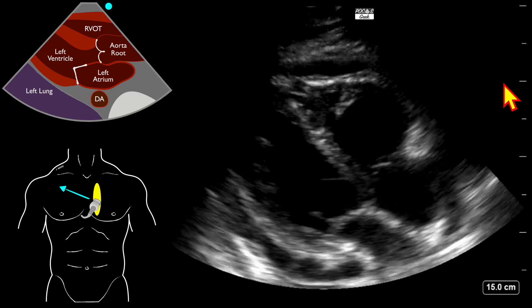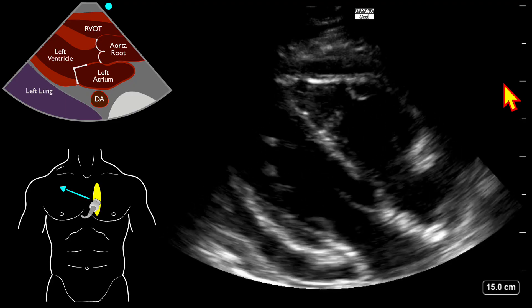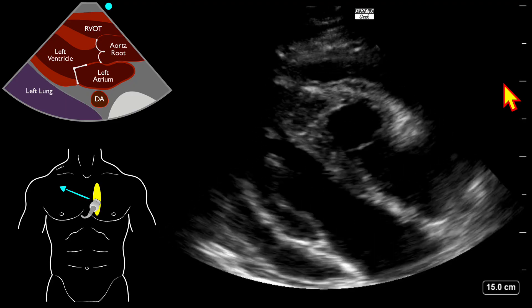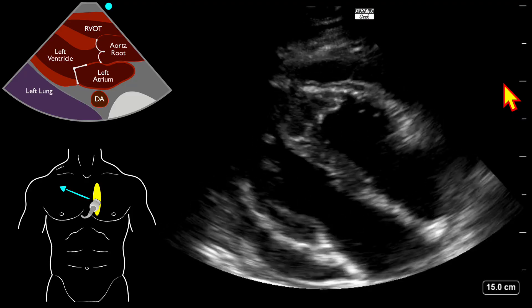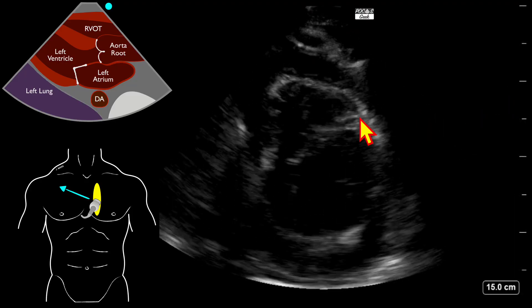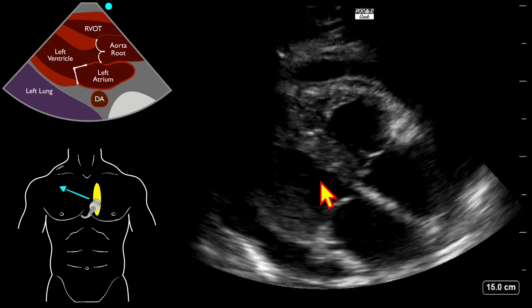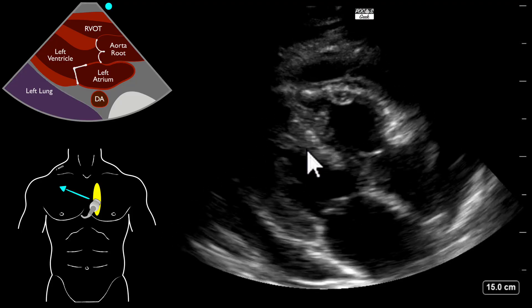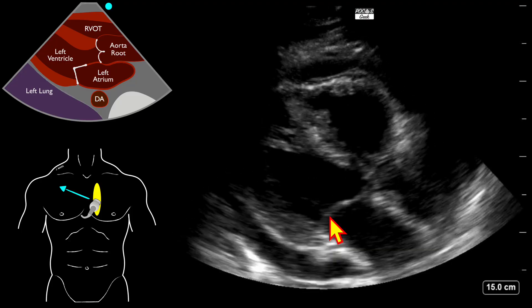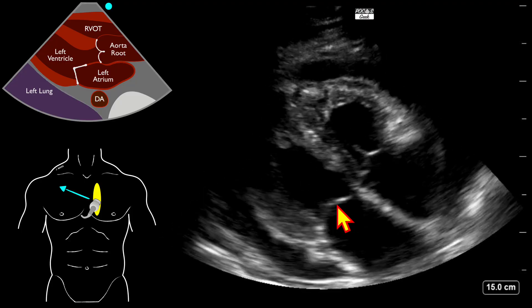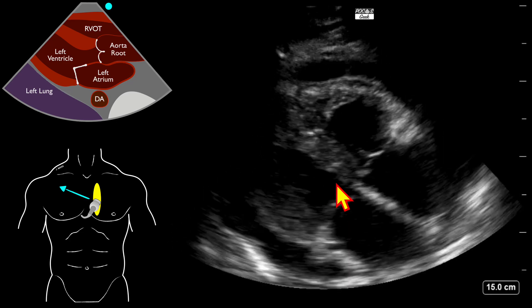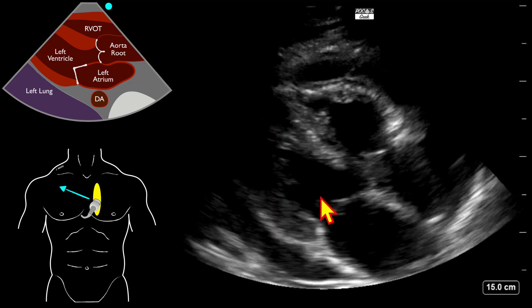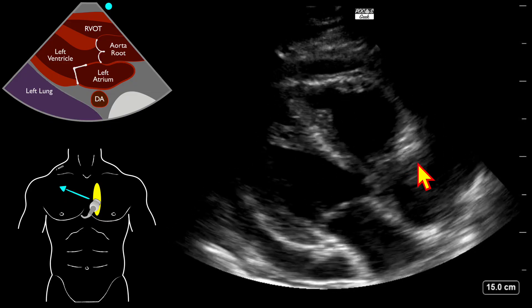If we get a second image—same thing, they archived two of them—we're not getting any more data than we did in the first one. Going back, we do see that the LV inner wall looks like it has good contraction. We can also see the mitral valve anterior leaflet is hitting the septal wall.